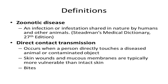For this and the other presentations associated with direct contact transmission, it will be important to know the meaning of certain terms. A zoonotic disease is an infection or infestation shared by both animals and people. When we use the term zoonotic disease, that does not always mean the disease has been transmitted from an animal to a person — it just means that both people and animals are capable of getting that disease.